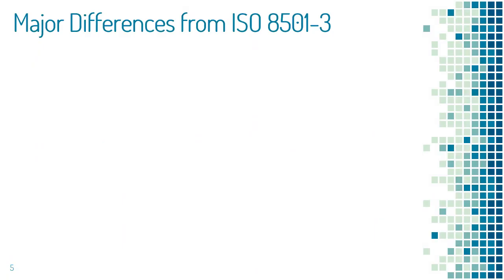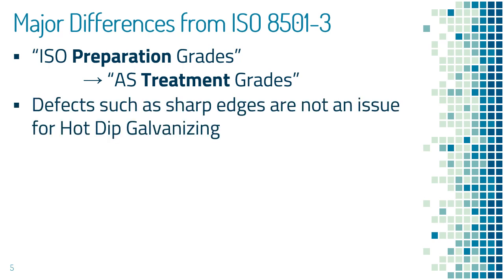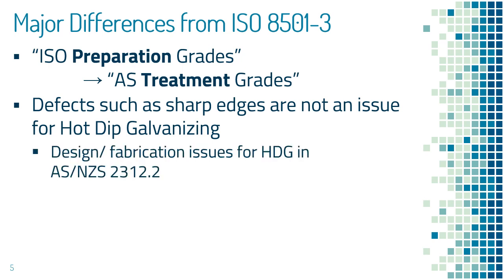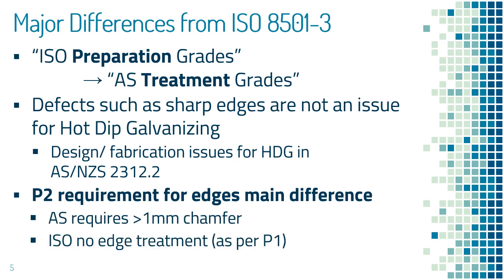How does the Australian standard differ from the ISO counterpart? The grades are referred to as treatment grades in the local standard, whereas ISO uses the term preparation grade, which is confusing as preparation is also used for levels of blast cleaning. The local standard notes that a number of these defects are not applicable for hot-dipped galvanised coatings, as galvanised coatings build up on sharp edges. It refers the reader to AS/NZS 2312 Part 2 for design and fabrication concerns for those coatings. The main difference with the ISO standard is that a 1mm chamfer is required for edges at the P2 level in the local standard, while in the ISO standard no treatment is necessary at this level.